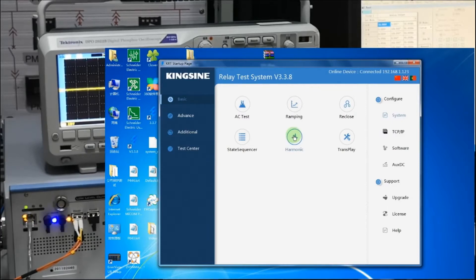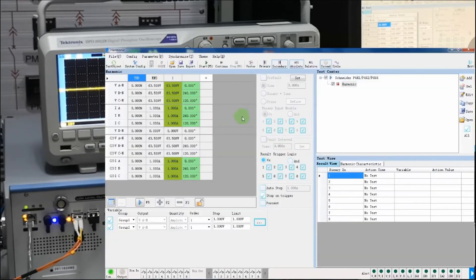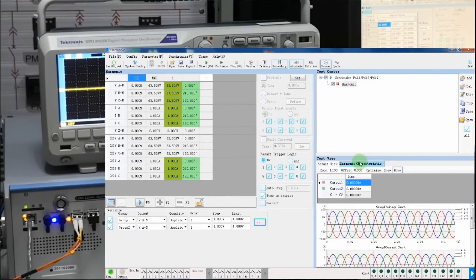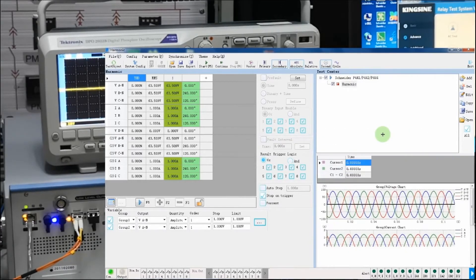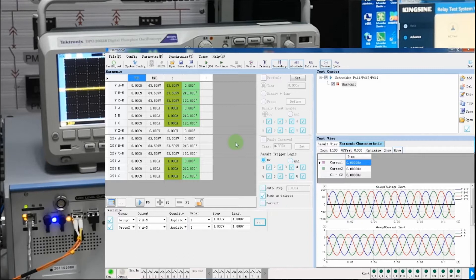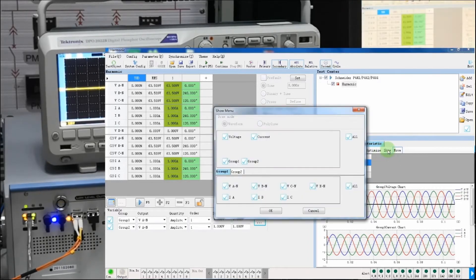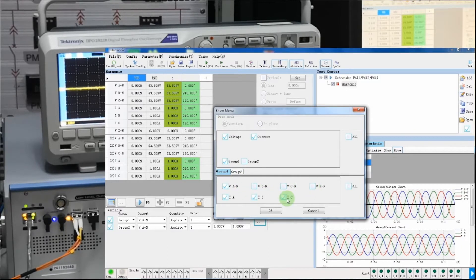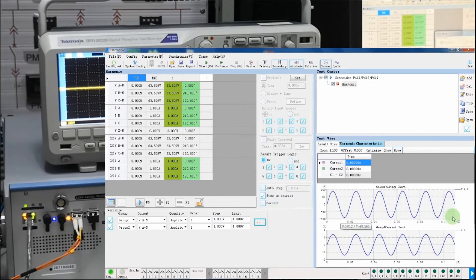After making physical connection, we will just enter the harmonic model of KRT software. Once clicked harmonic model, we enter in main screen of harmonic model. In main screen on right side, we can see there is a harmonic characteristic.